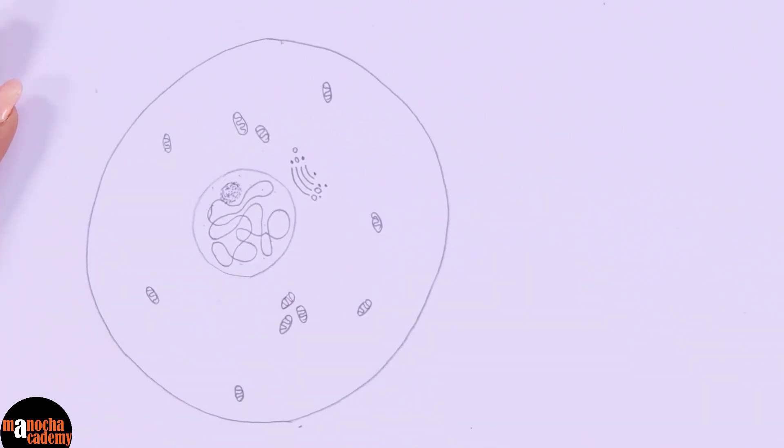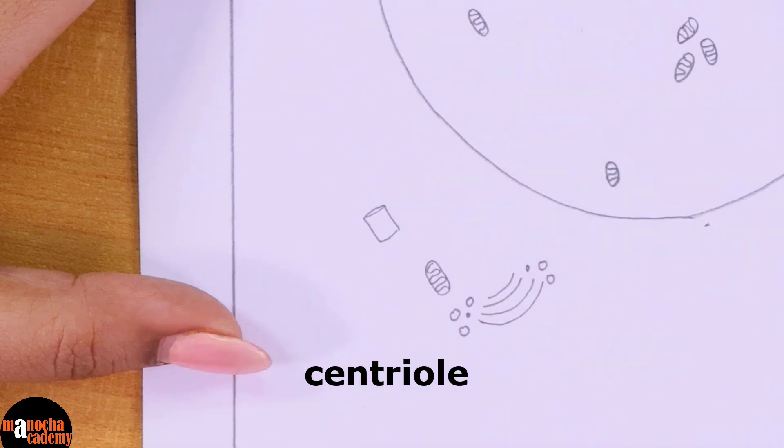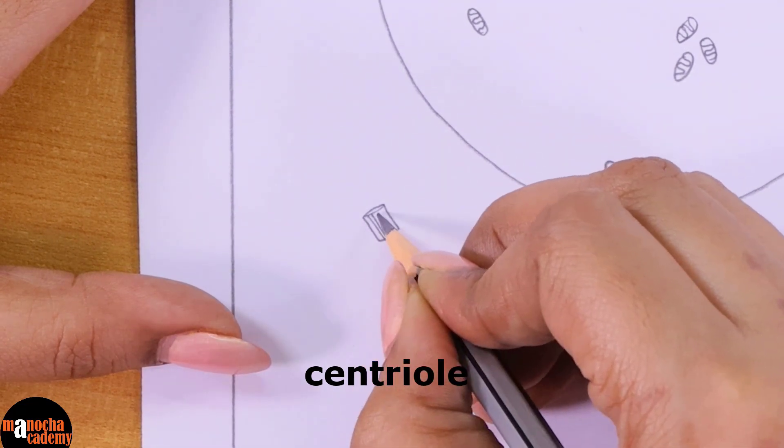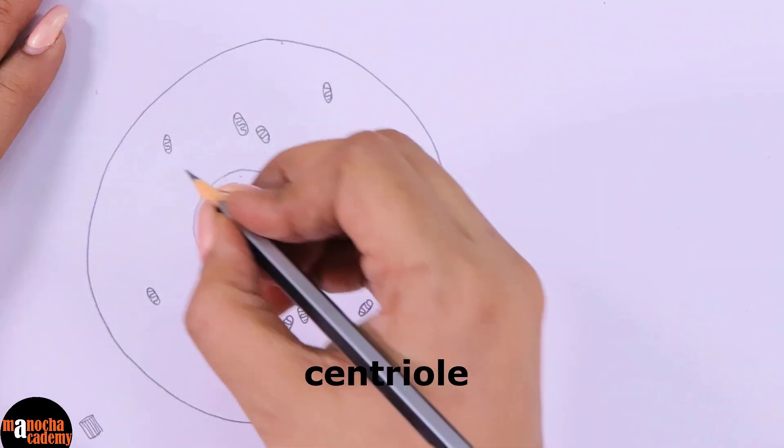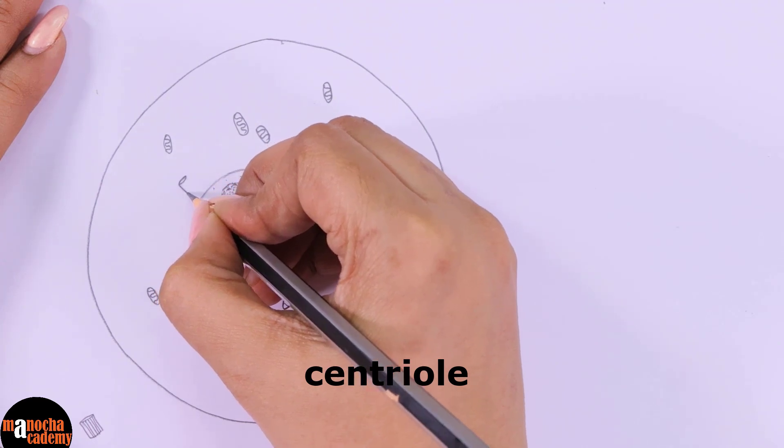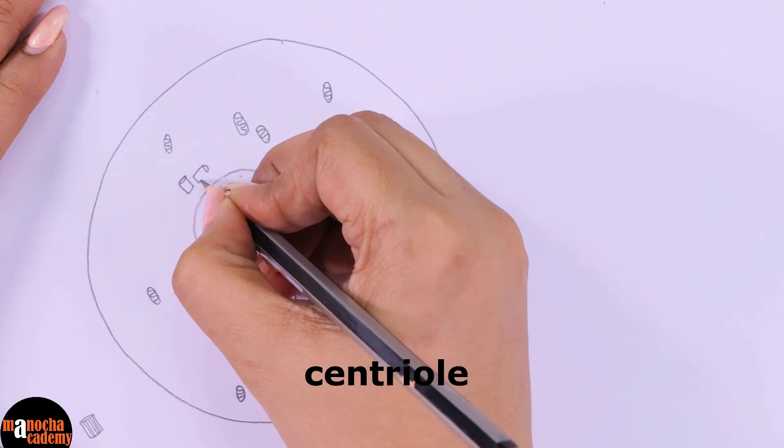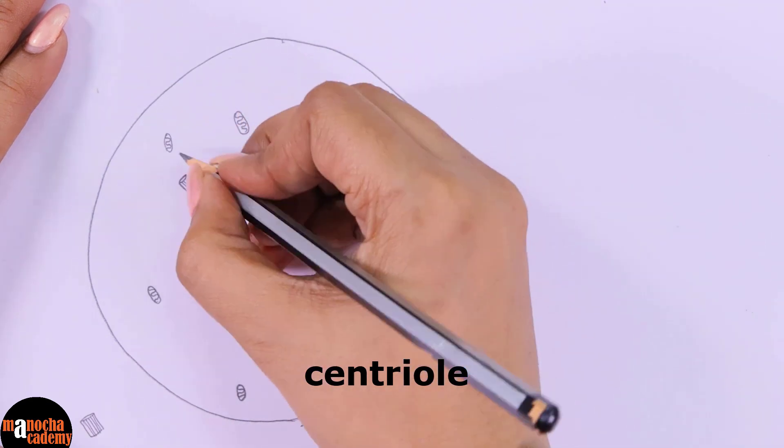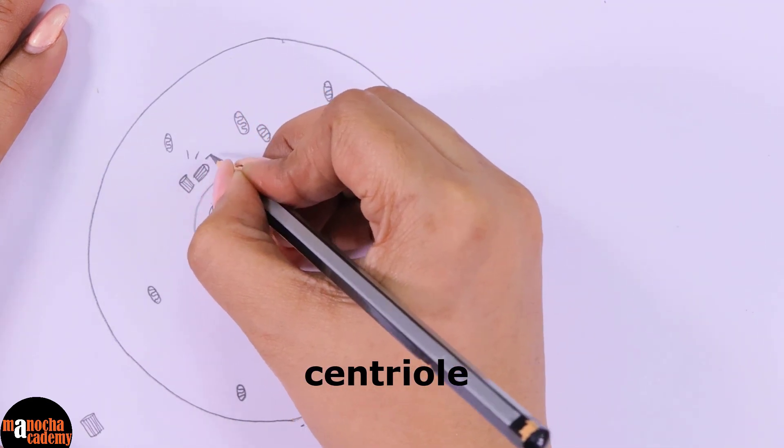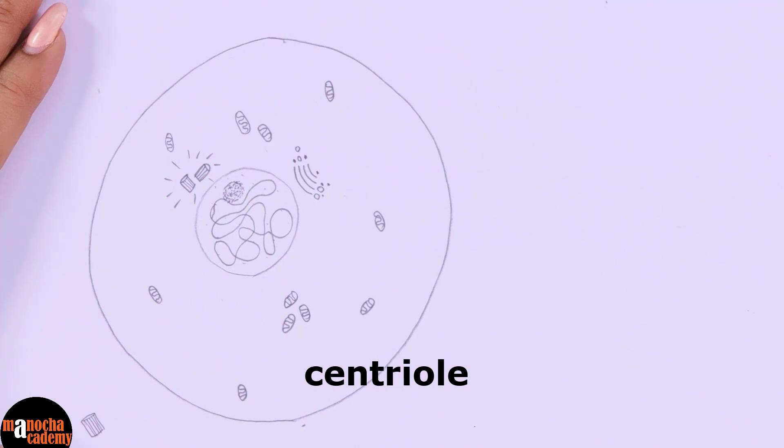Now we will draw the centrosome that is the centriole and you know that centrioles are rod shaped structures. So we will draw the centrioles like this and we will also draw lines because centrioles are made up of tubules. The centrioles are present again near the nucleus. You can draw it anywhere near the nucleus. Make sure that you have enough space to draw two centrioles placed at right angles to each other. So these are the two centrioles and from surrounding the centrioles, you will give out some ray-like structures. These are the astral rays.